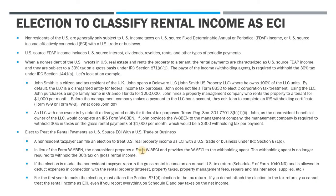Now that the W-8 ECI is prepared and provided, the next step is for John to prepare his tax return and make the election on the return. John has to file a Form 1040NR — that's the non-resident tax return — and he includes Schedule E to report the rental income and the expenses. Once he completes Schedule E, he's allowed to deduct all expenses related to the business: mortgage interest or credit card interest, property taxes, property management fees, repairs and maintenance, supplies, landscaping, security. Anything spent to keep that rental property up and running is likely a deductible expense.